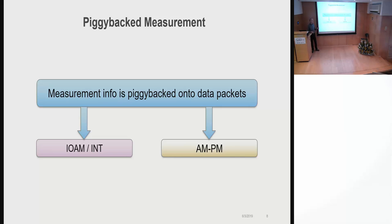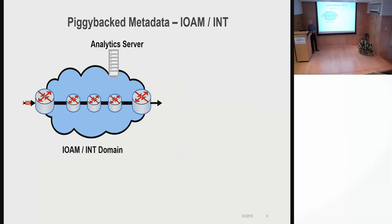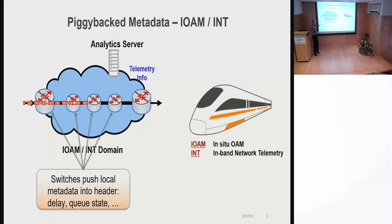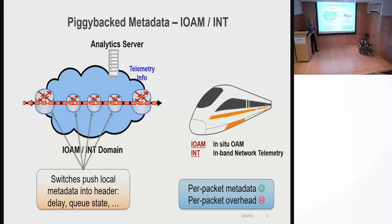First a few words about IOAM and INT. These are two similar protocols, and the idea is that every network device along the path can piggyback measurement related information onto data packets, information like timestamps and queue states, and some of this information is exported to a server. So you get very detailed per-packet, per-flow information, but the cost is that you have a lot of overhead for each data packet.